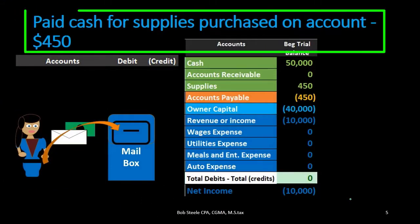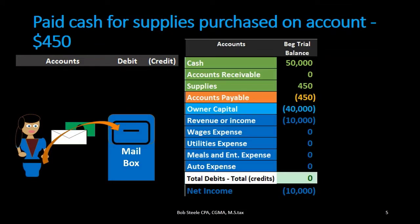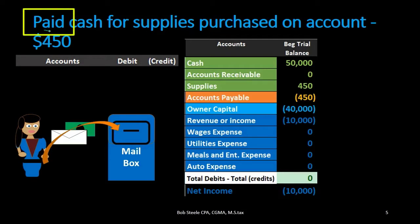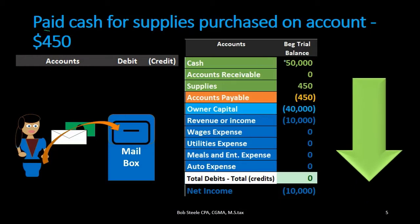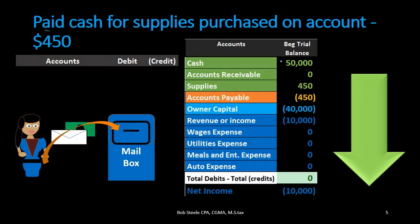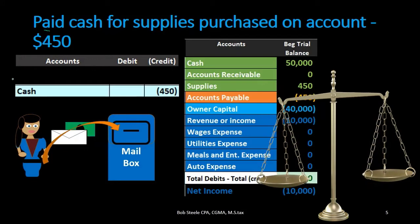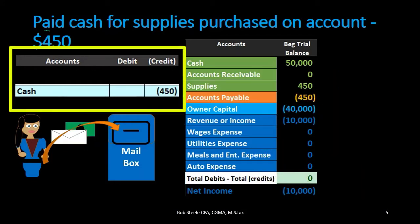Next transaction: paid cash for supplies purchased on account, $450. First question — is cash affected? Yes. The keyword is 'paid,' and that means cash is going down. Cash has a debit balance, so to make it go down we do the opposite — a credit. We're going to put the credit on the bottom because credits typically go on the bottom.